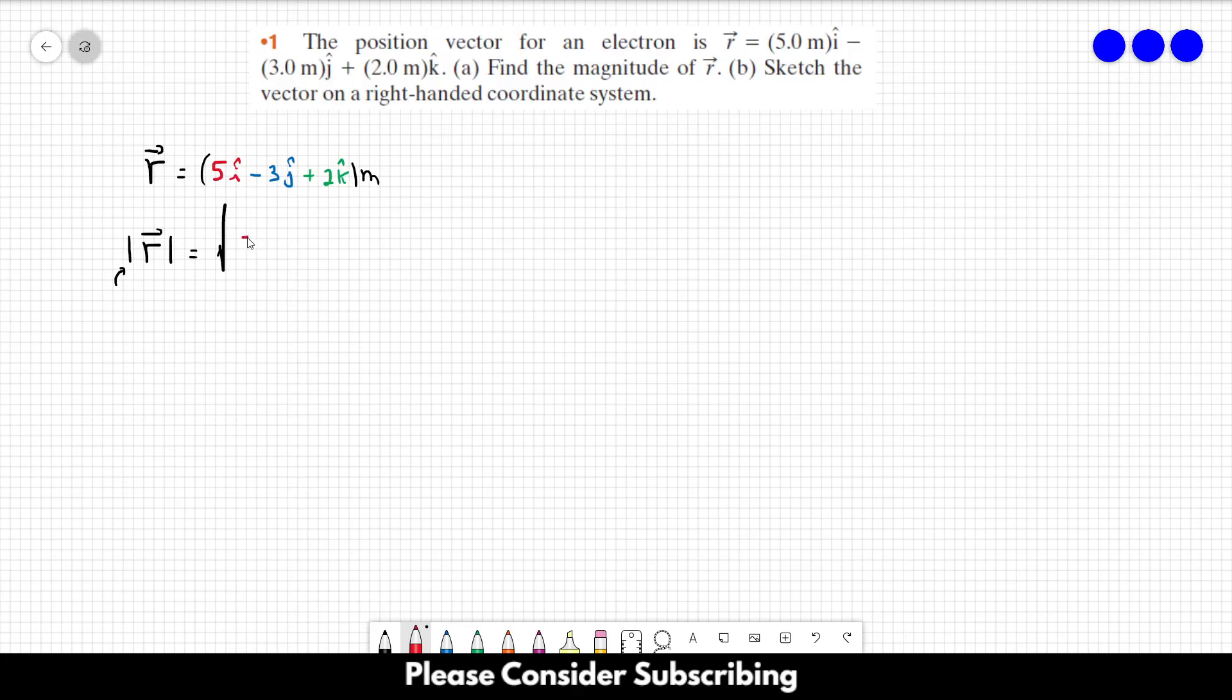For example, in this case, it would be 5 squared plus minus 3 squared plus 2 squared. And that's pretty much it. We just have to finish the calculation over here.